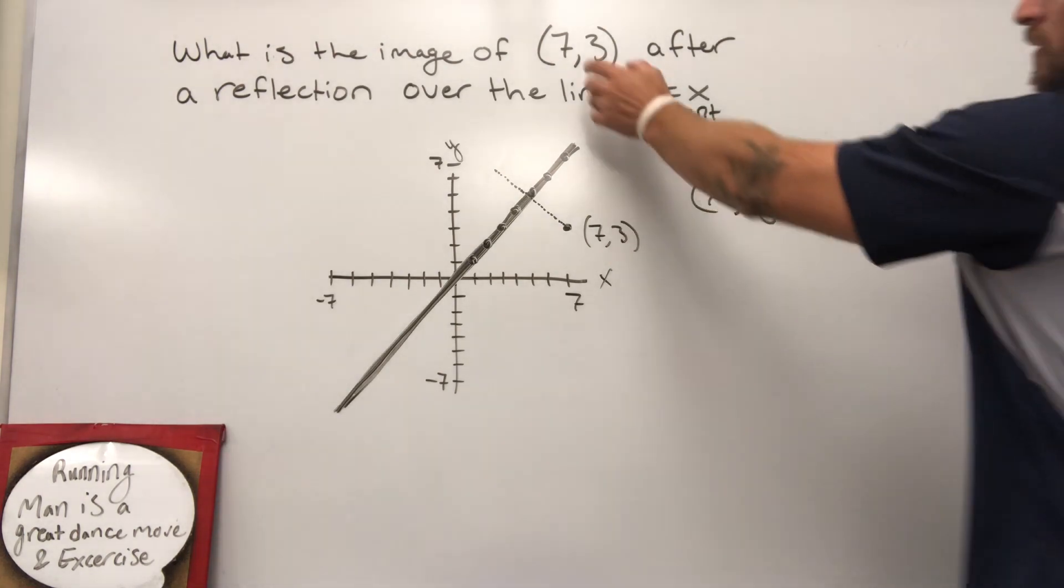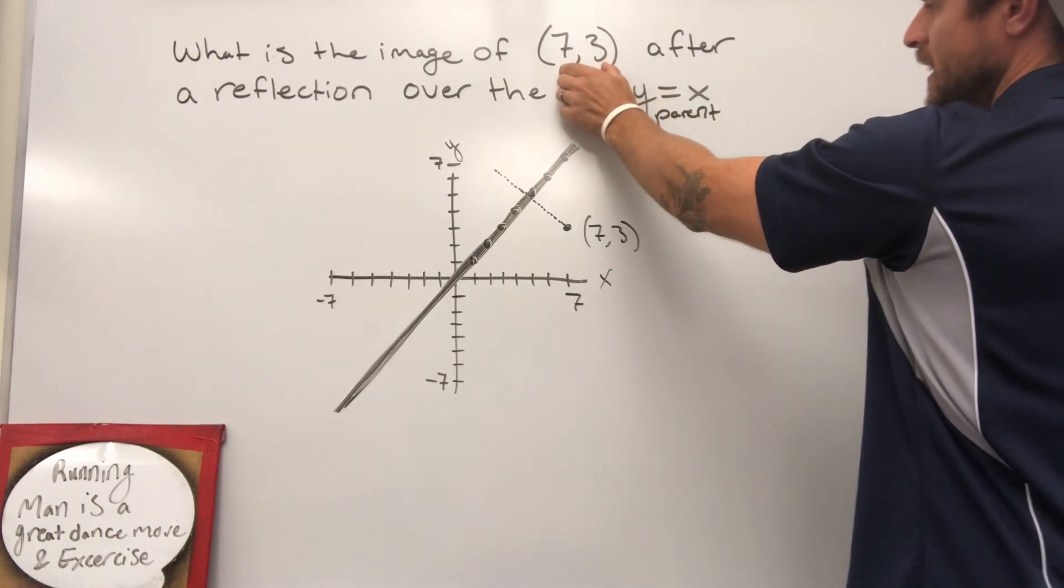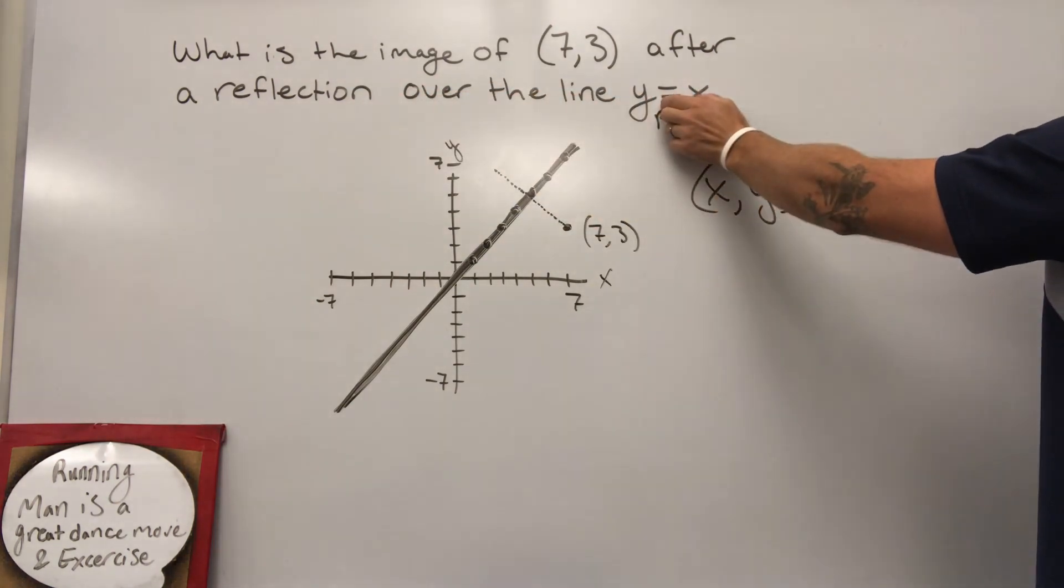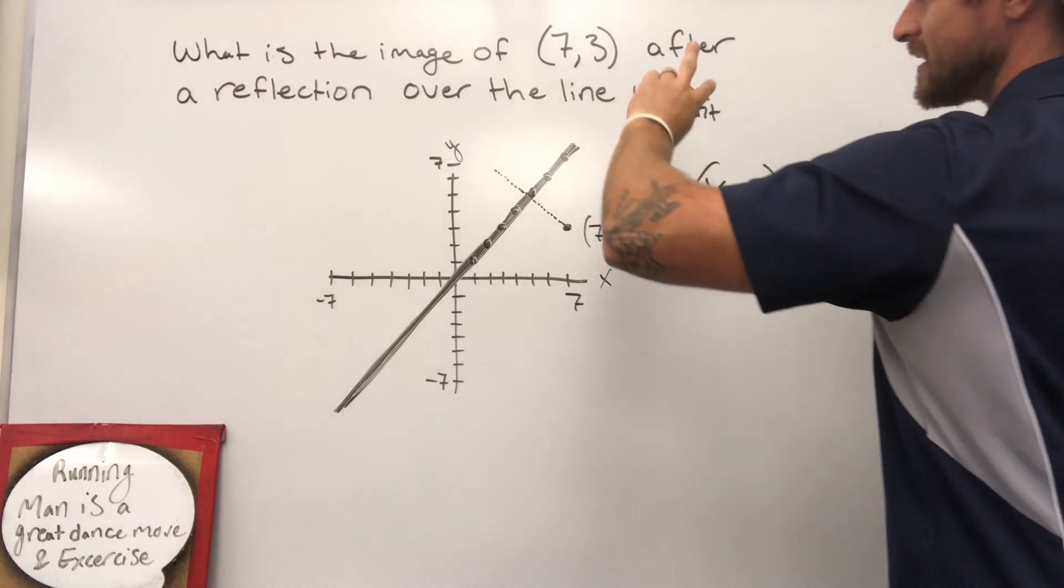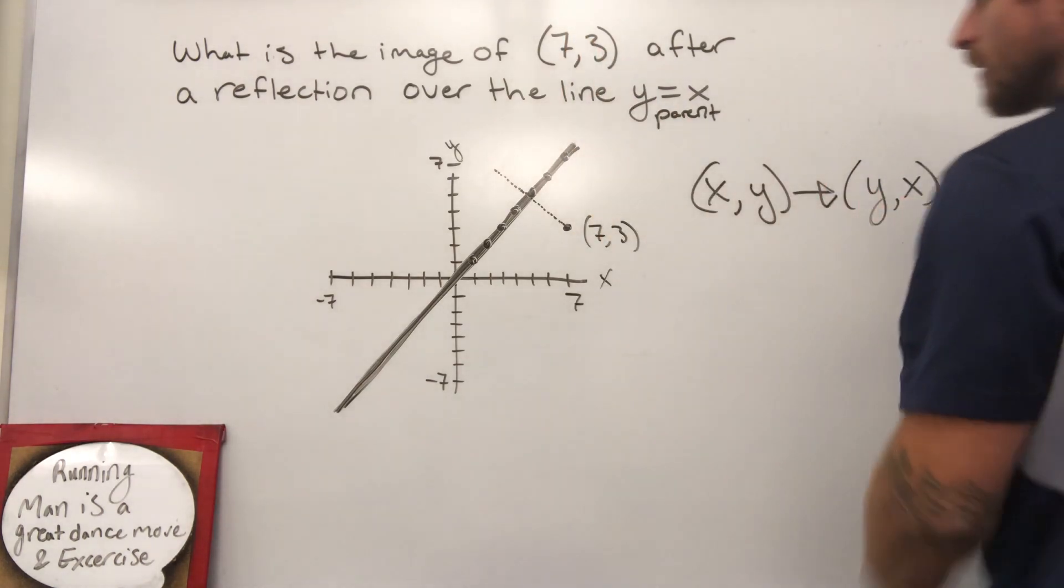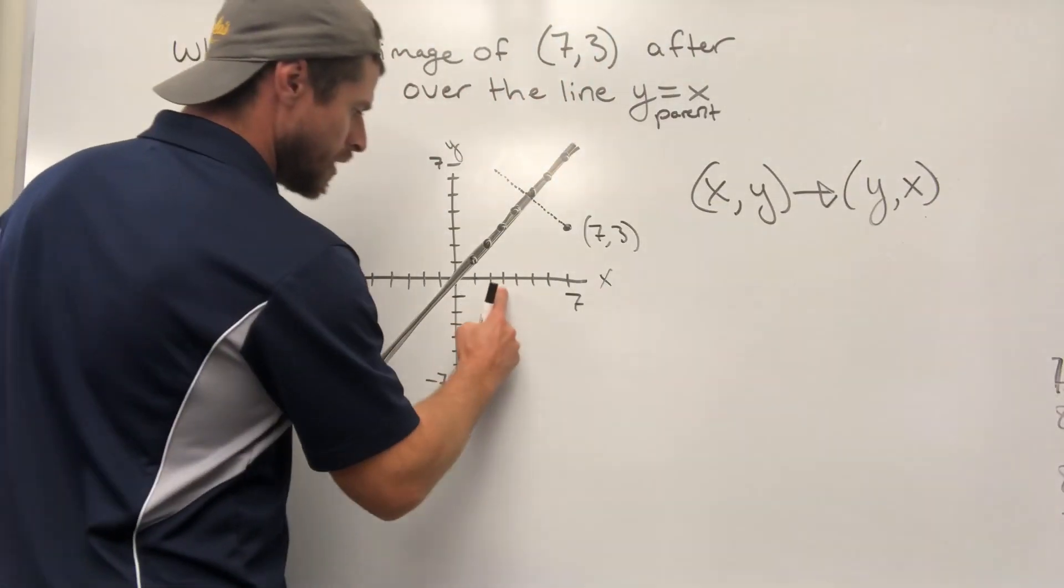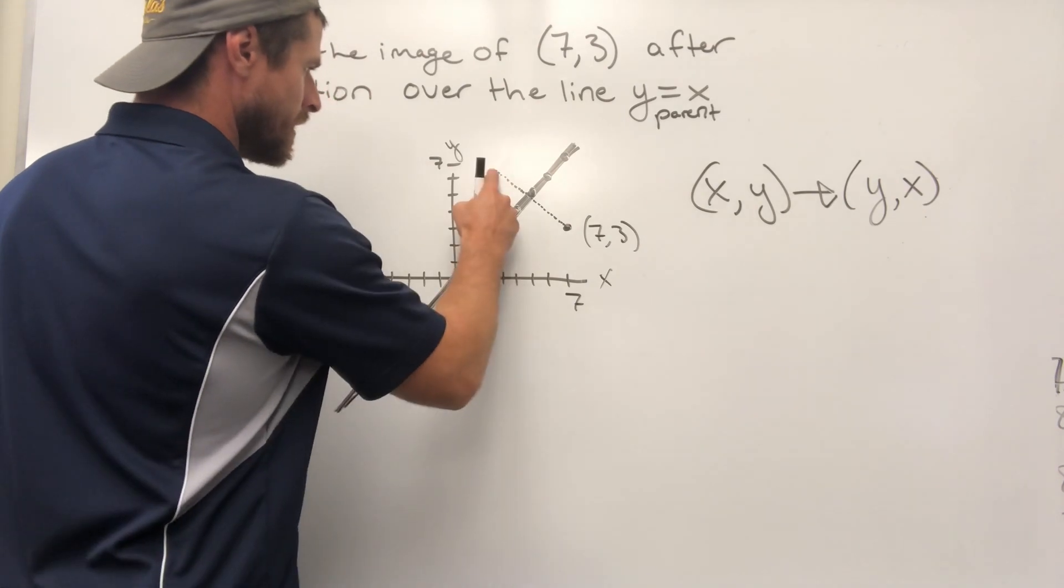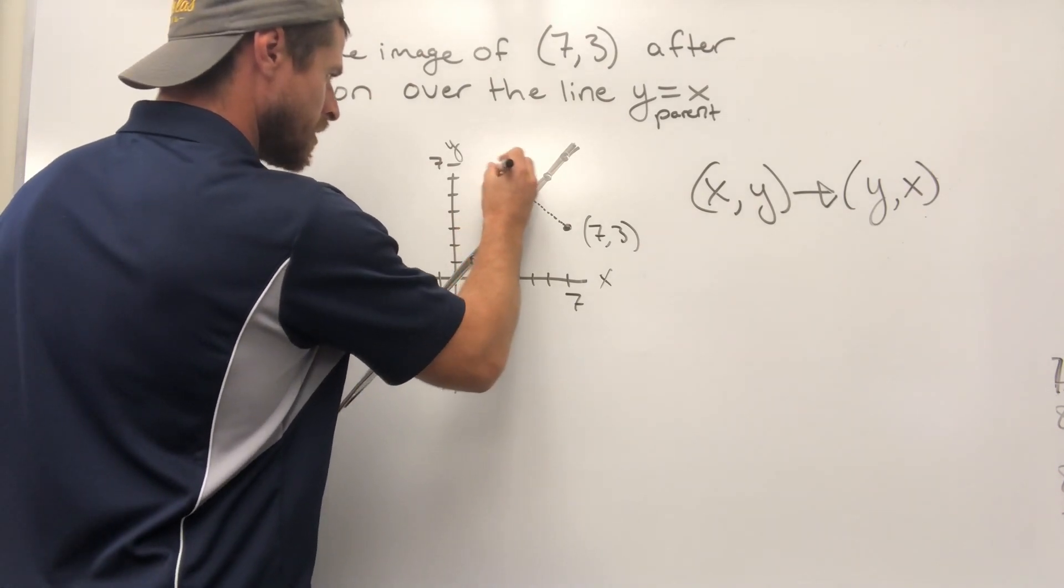So if your dot was originally at (7, 3), and then you reflect it over the line y equals x, all that happens is the 7 and the 3 are going to flip. So now our new point is going to be at 3 over and 7 up, just like the soda.